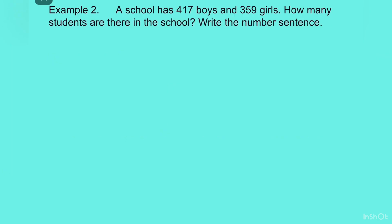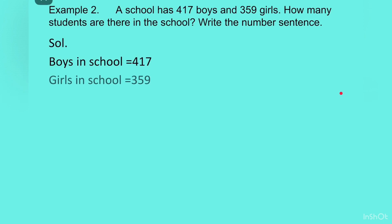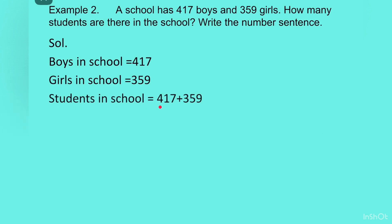Let us look at the question again. A school has 417 boys, so we will write: boys in school is equal to 417. Then, back to the question: and 359 girls, so girls in school is equal to 359. Then, how many students are there in the school? So we have to write: students in school is equal to — we have to add the number of boys and girls. So we will write 417 plus 359.